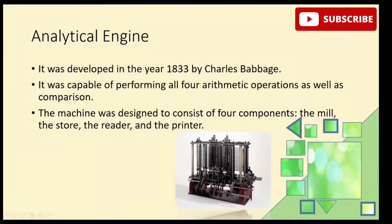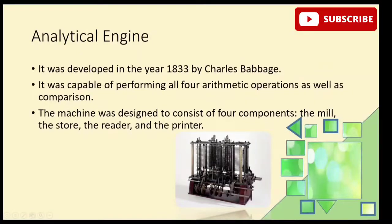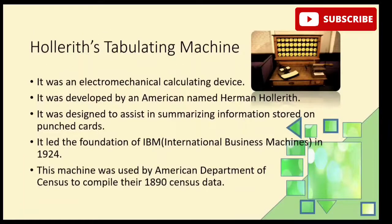To summarize, the mechanical calculating devices include: Abacus, Napier's Bones, Pascal's Adding Machine, Leibniz Calculator, Jacquard's Loom, Difference Engine, and Analytical Engine. Among these, Abacus and Napier's Bones are manual calculating devices, while Pascal's Adding Machine, Leibniz Calculator, Jacquard's Loom, Difference Engine, and Analytical Engine are semi-automatic calculating devices.